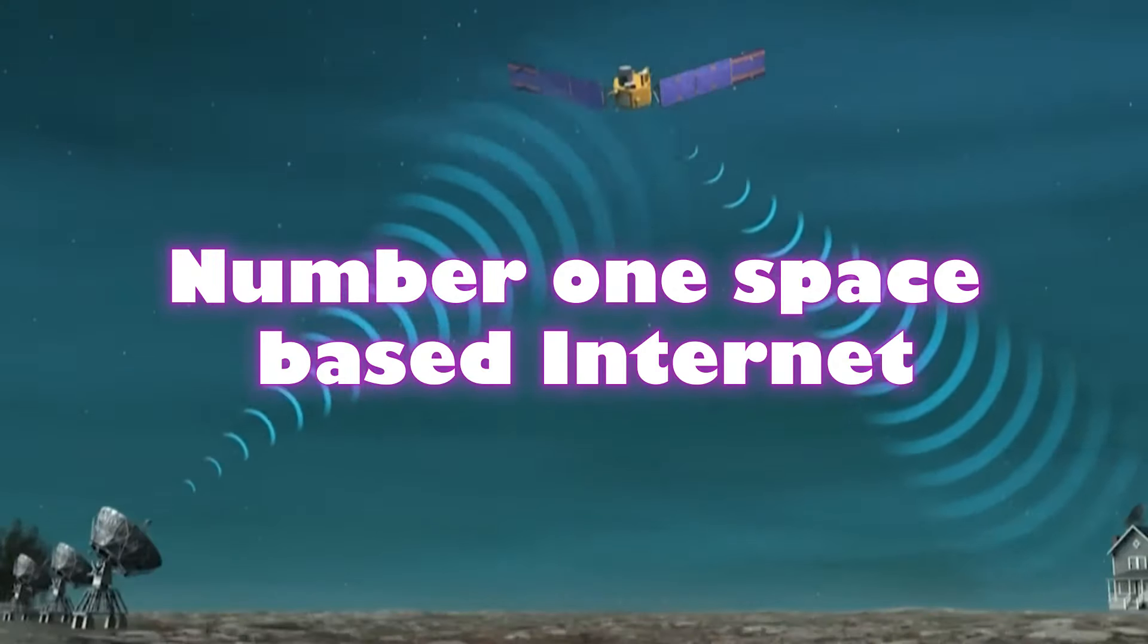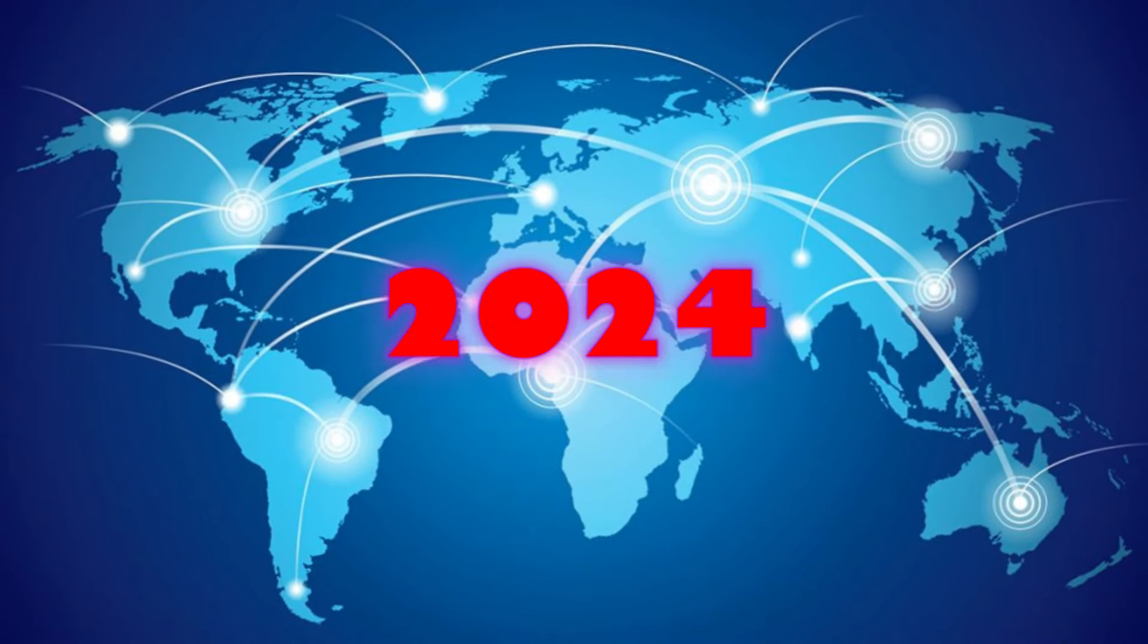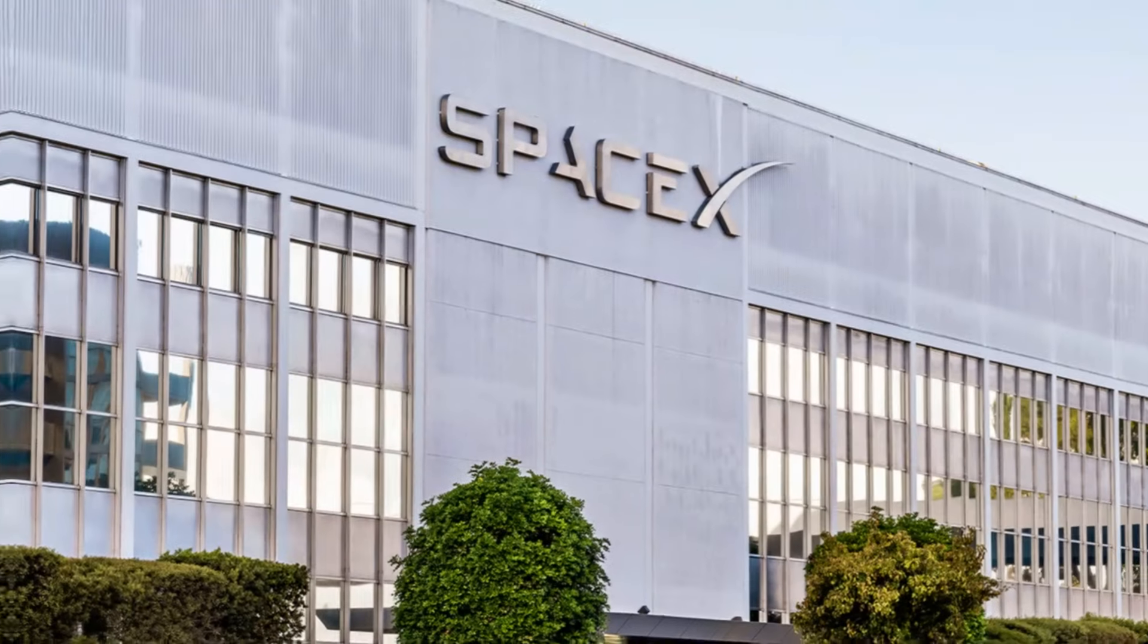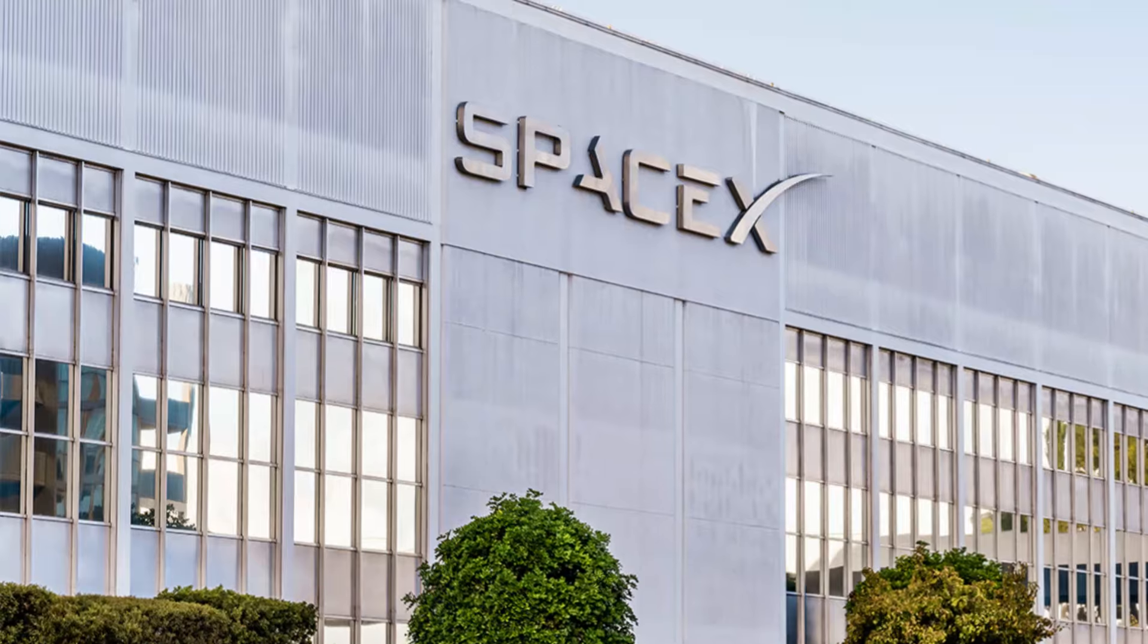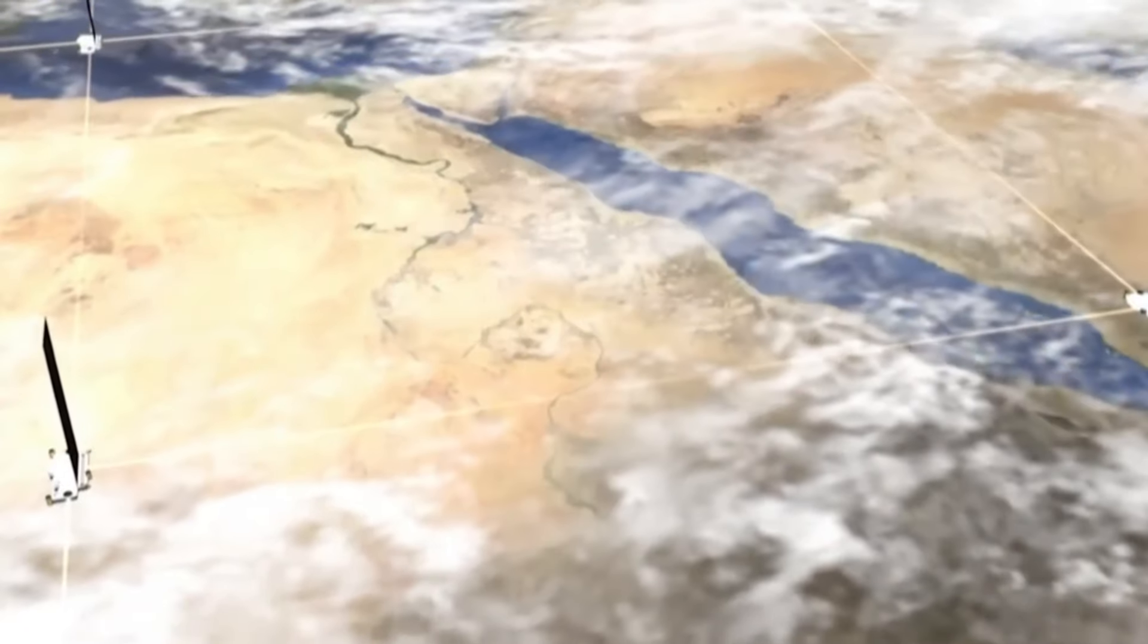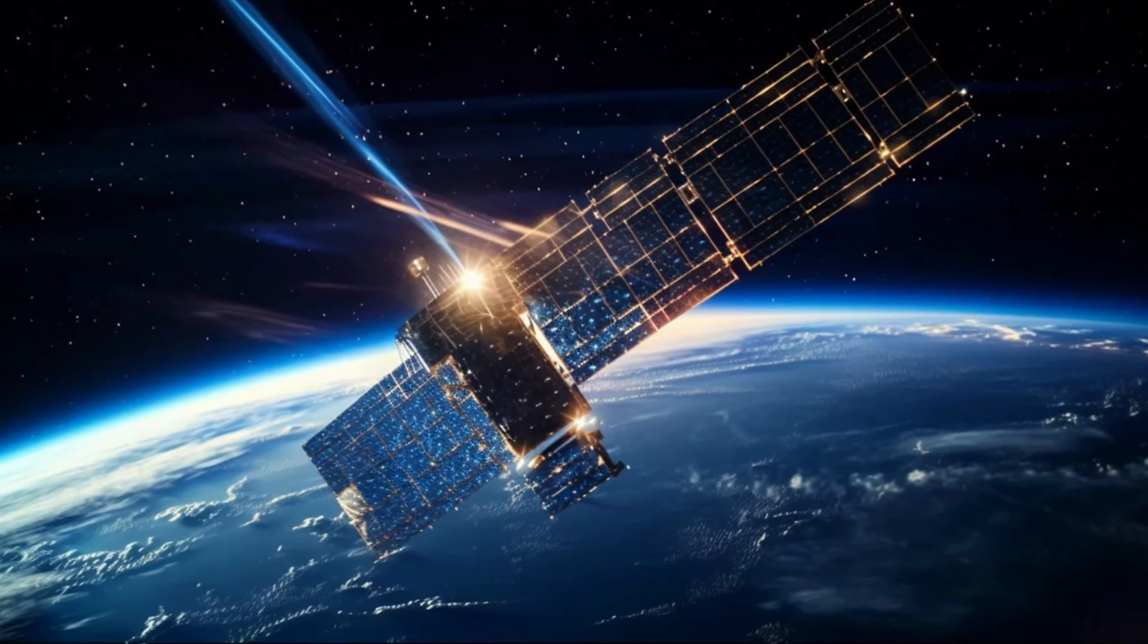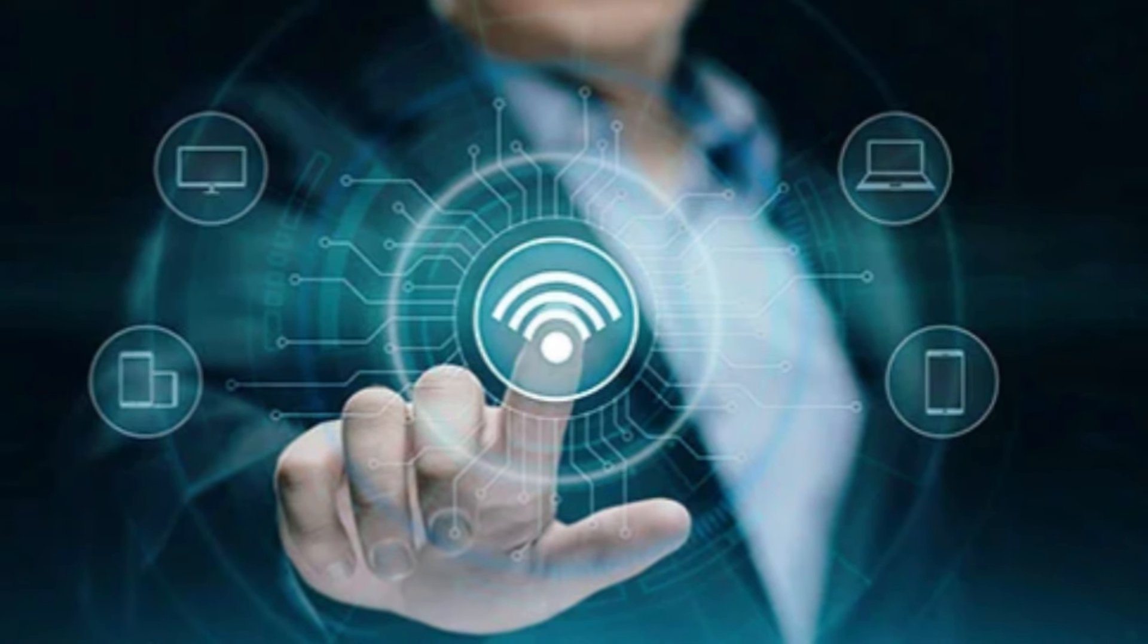Number 1: Space-Based Internet. Imagine being able to access the internet from anywhere on Earth, even in the most remote and difficult-to-reach places. In 2024 and 2025, we will witness an incredible development in space-based internet networks, with SpaceX, a company renowned for its audacious and trailblazing ventures in space exploration, leading the way. Their ambitious project, Starlink, aims to provide extremely fast internet via satellites in space. It goes beyond a tech dream.